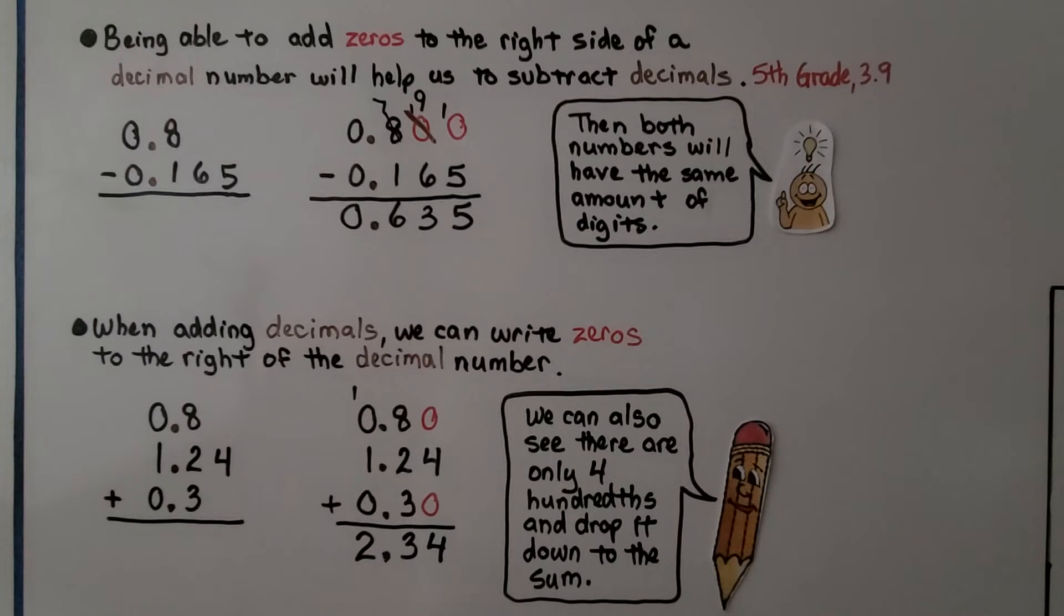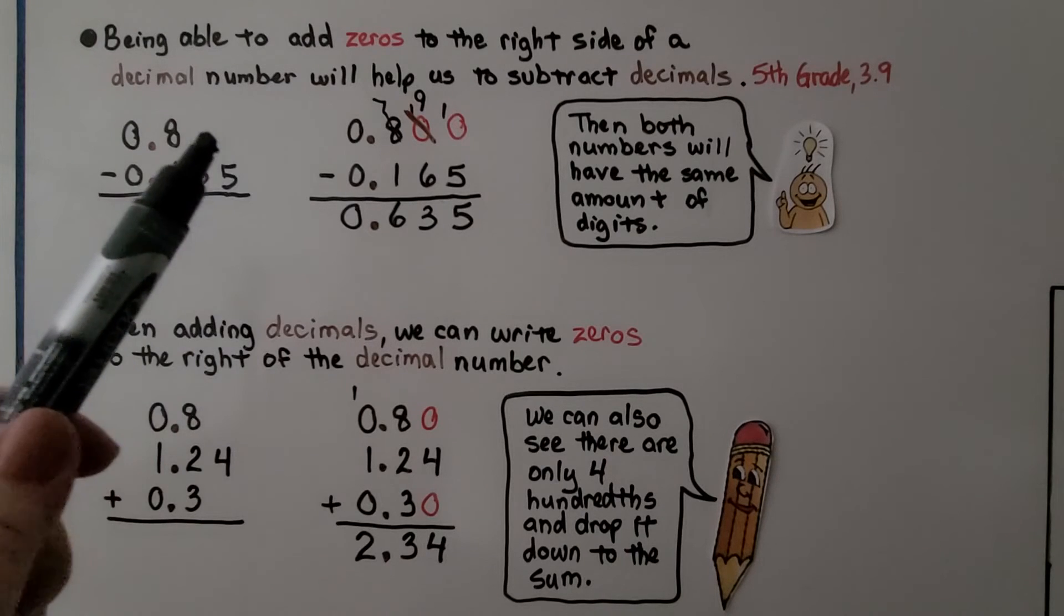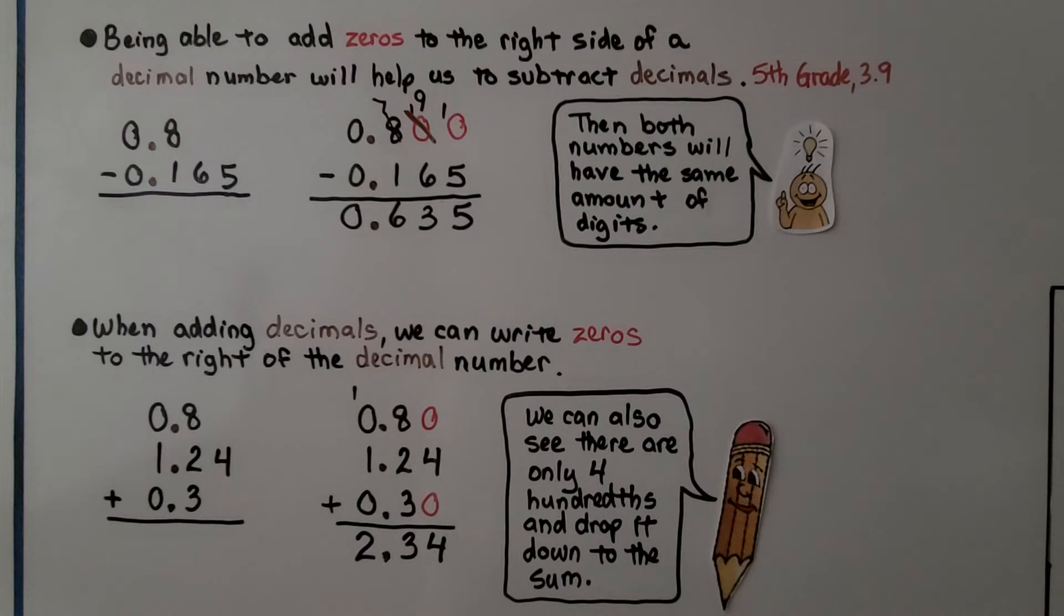That means being able to add zeros to the right side of a decimal number will help us to subtract decimals. If we see 8 tenths minus 165 thousandths, we can add some zeros as placeholders. Then both numbers will have the same amount of digits and we can subtract.